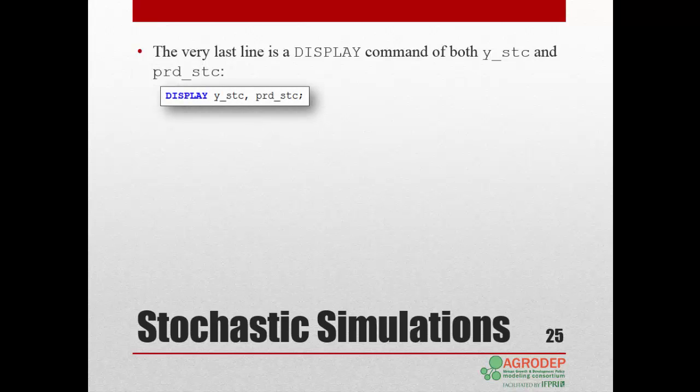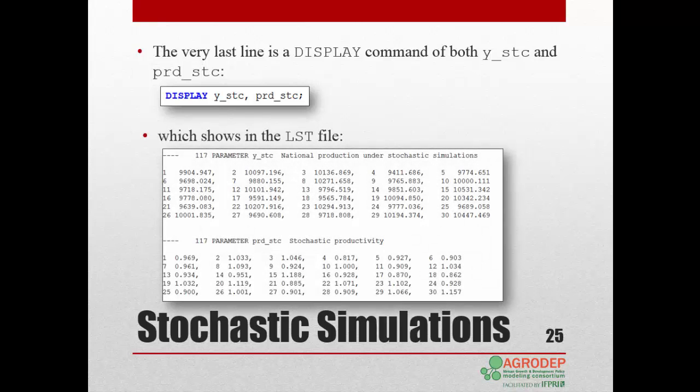Finally, we end the program with a display command of both the national production y_stc, and the stochastic values of capital productivity prd_stc. Run the model in GAMS IDE. This is what you will see in the list file: the evolution of the national production, given the stochastic values of the capital productivity over the 30 draws. Not surprisingly, all else being constant, the greater the productivity of capital, the larger the national production.